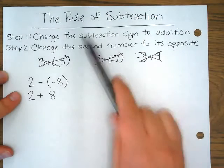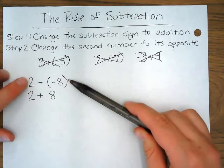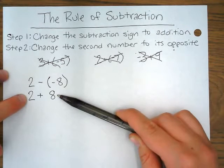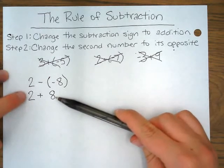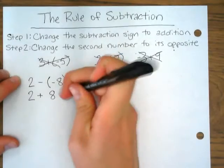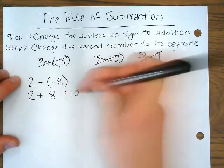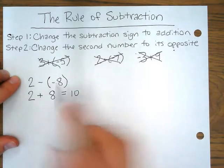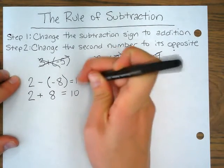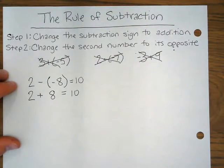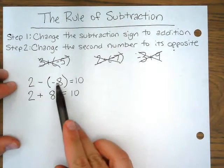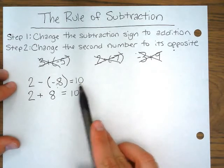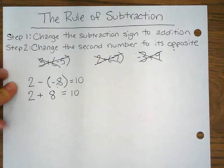According to the rule of subtraction, this equation will get you the exact same answer as the original equation. This one just might be easier for us to solve in our heads, because two plus eight is ten. Therefore I know that two minus negative eight equals ten. And I know this answer is reasonable because when I take away a negative number my answer should be getting bigger, and ten is definitely bigger than two.